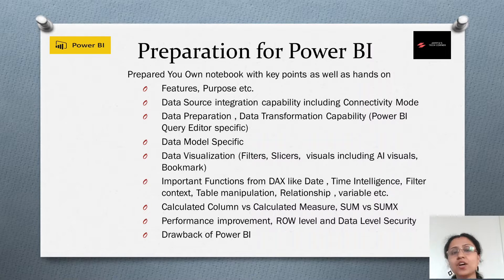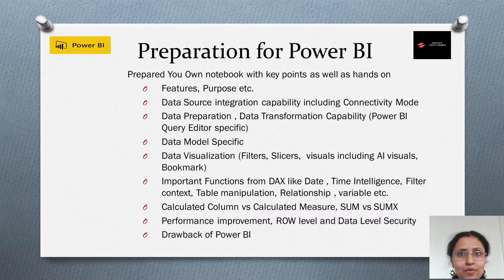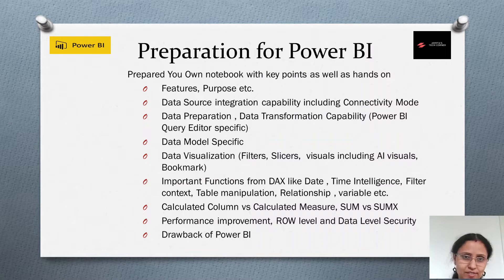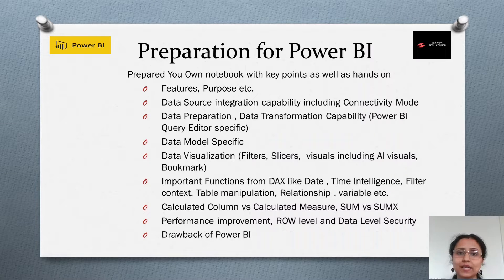In the data modeling stage, understand how relationships are built — what is active vs. inactive, what is a Cartesian product, and relationship cardinalities like one-to-many and many-to-many. Know the purpose of each and why one-to-many or many-to-many relationships exist.